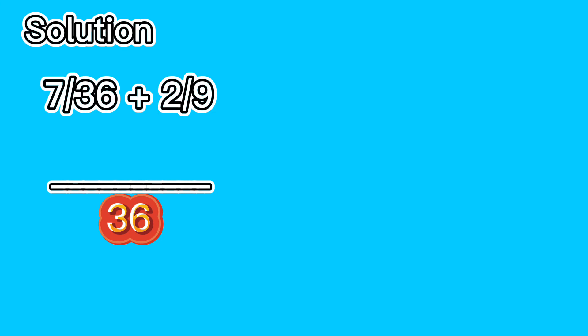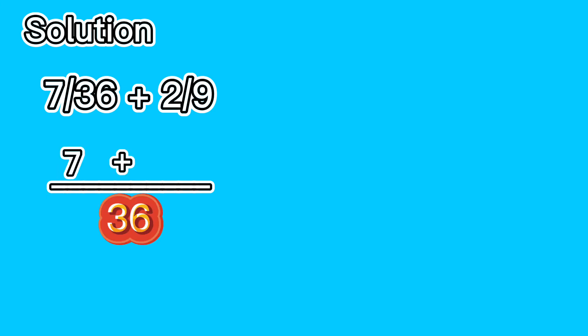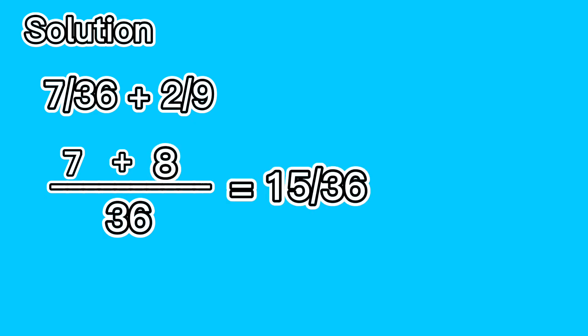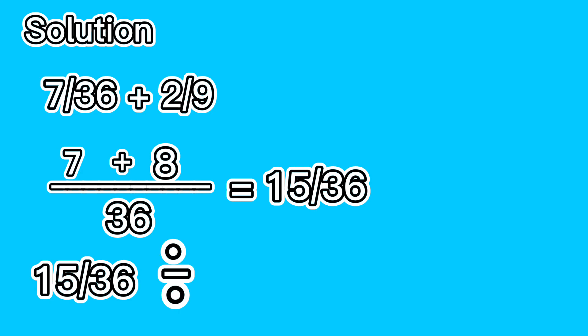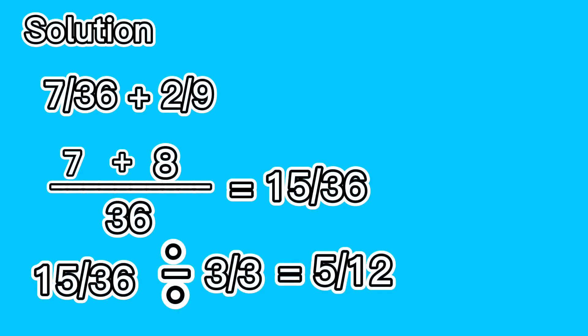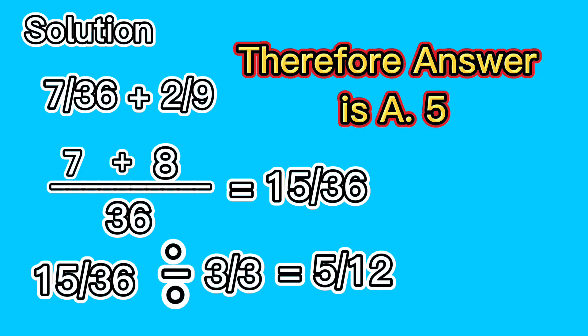36 divided by 36 equals 1, multiplied by 7 equals 7. Plus: 36 divided by 9 equals 4, multiplied by 2 equals 8. Answer is 15 over 36. Now reduced to its lowest term: 15 over 36 divided by 3 over 3 is equal to 5 over 12. Therefore answer is letter A: 5.